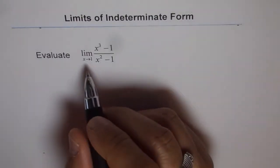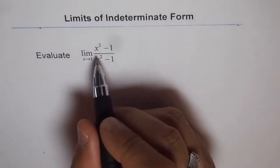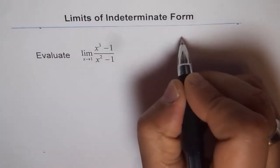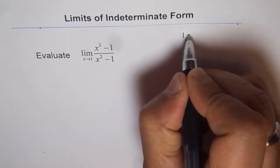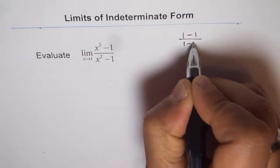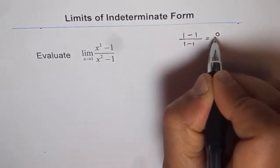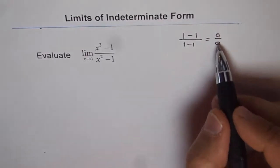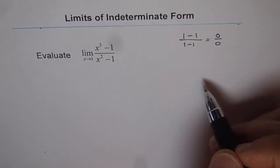So as a first step, let's substitute 1 for x and see what we get. So we get 1 cube is 1, minus 1 divided by 1 minus 1, which is 0 over 0. So if we get 0 over 0, we know it is indeterminate form.